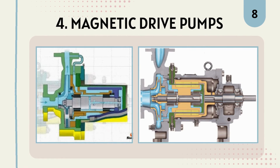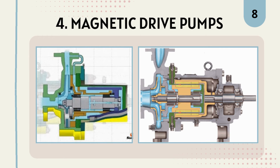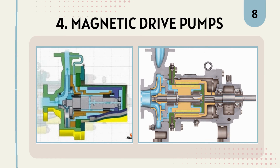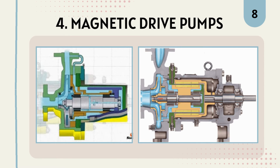Up next is the magnetic drive pump. This type of pump uses magnetic coupling to transfer power from the motor to the pump, eliminating the need for a mechanical seal. Magnetic drive pumps are suitable for handling hazardous and corrosive chemicals and are commonly used in chemical processing and wastewater treatment plants.